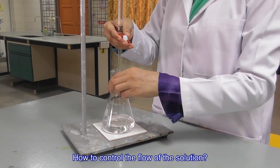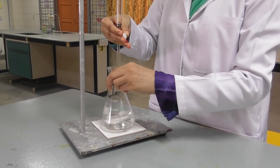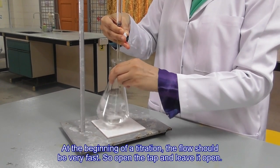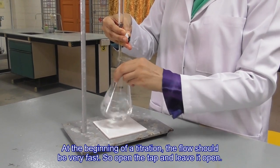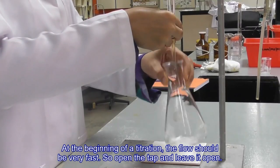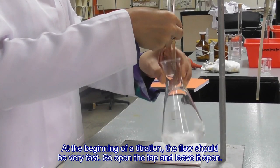How to control the flow of the solution? At the beginning of a titration, the flow should be very fast, so open the tap and leave it open.